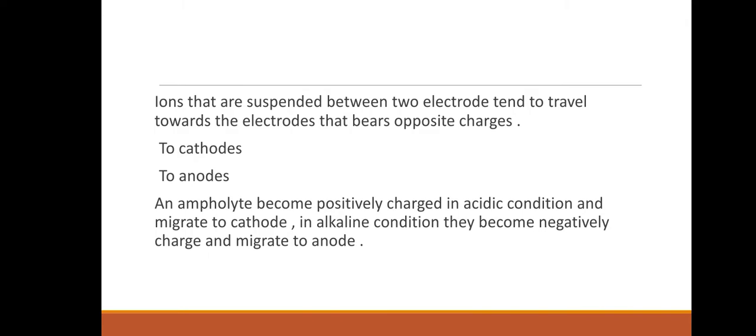We also have amphoteric species, which can act as either an acid or a base. In acidic medium, the amphoteric species will carry a positive charge and will migrate towards the cathode. In alkaline conditions, it will carry a negative charge and travel towards the anode. This is the behavior of an amphoteric species.